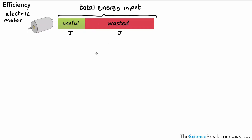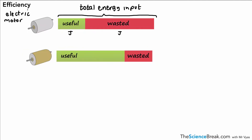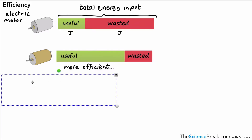We can look at a second example with another motor. For this second motor, we can see an amount of energy being input into the system, but much more of it is transferred usefully. We say the second motor is more efficient because more of the energy being input is being transferred in a useful way — i.e., as a kinetic energy store.